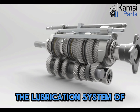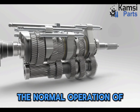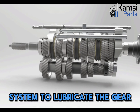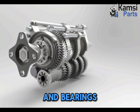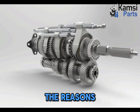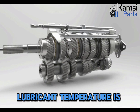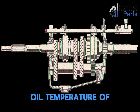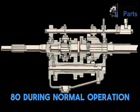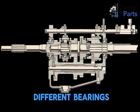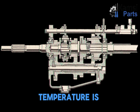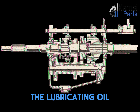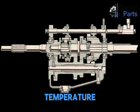The lubrication system of the gearbox is of great significance to its normal operation. Large-scale wind power gearboxes must be equipped with a reliable forced lubrication system to lubricate the gear meshing area and bearings. Insufficient lubrication accounts for more than half of the reasons for gearbox failure. Lubricant temperature is related to component fatigue and the life of the entire system. Generally, the maximum oil temperature of the gearbox should not exceed 80°C during normal operation, and the temperature difference between different bearings should not exceed 15°C. When the oil temperature is higher than 65°C, the cooling system starts to work. When the oil temperature is lower than 10°C, the lubricating oil should be heated to the predetermined temperature before starting.